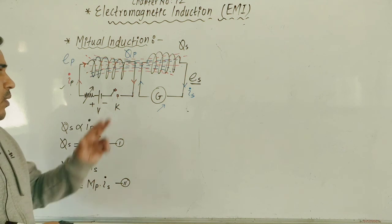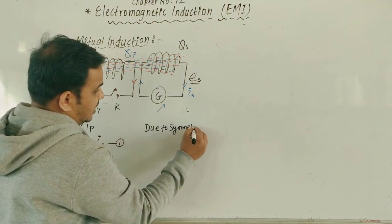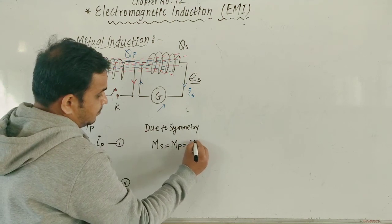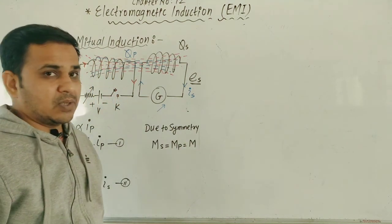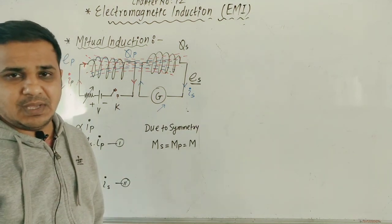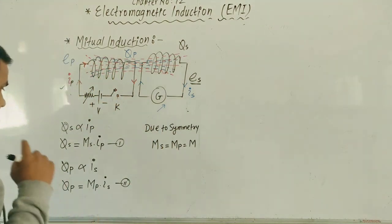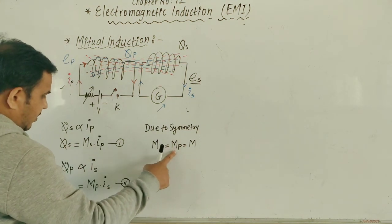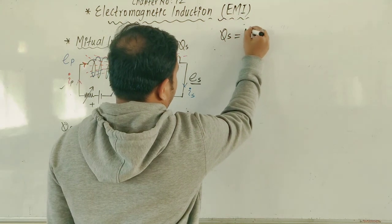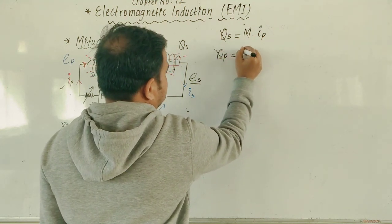Both coils have symmetry between them. Due to symmetry, the mutual inductance of the secondary coil is approximately equal to that of the primary coil — because mutual inductance depends on number of turns, shape and size, and if both coils have the same shape, size, and number of turns under perfect conditions, then M_S = M_P = M. So our two equations become: Phi_S = M × I_P, and Phi_P = M × I_S.